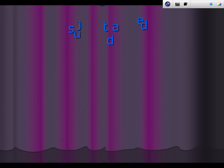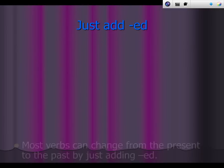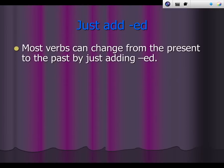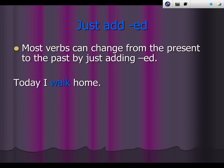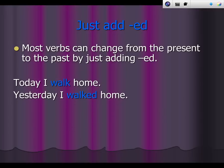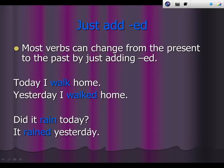Let's talk about when we just add -ed. Most verbs can change from the present to the past by just adding -ed. Today I walk home. Yesterday I walked home — the past tense is walked. Did it rain today? It rained yesterday.